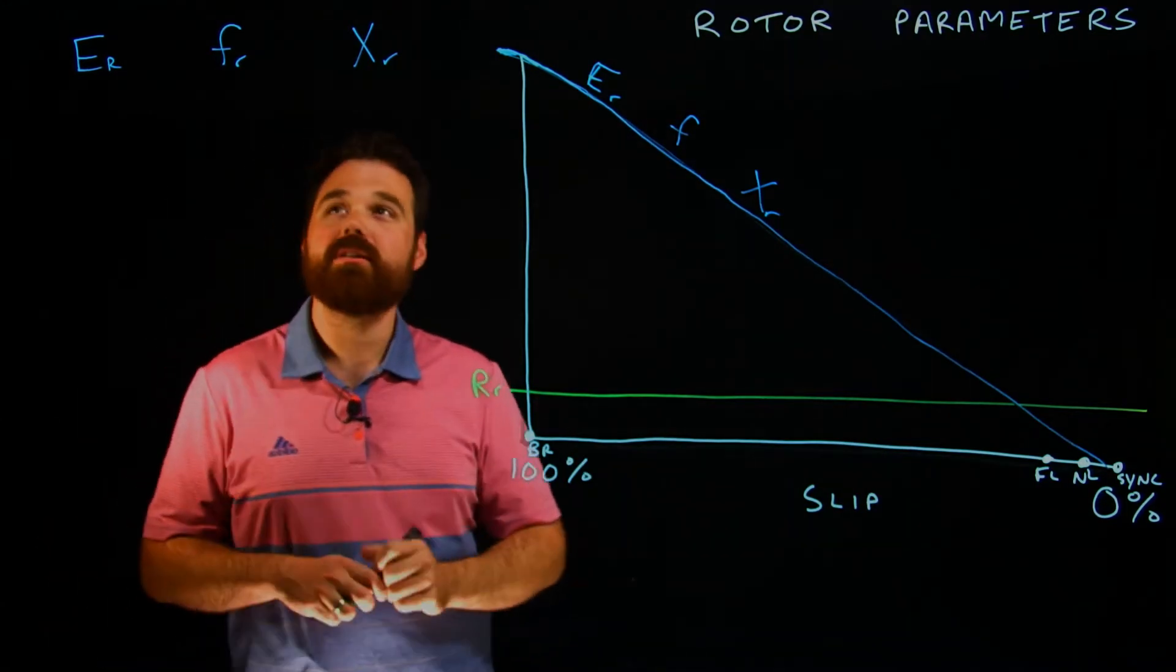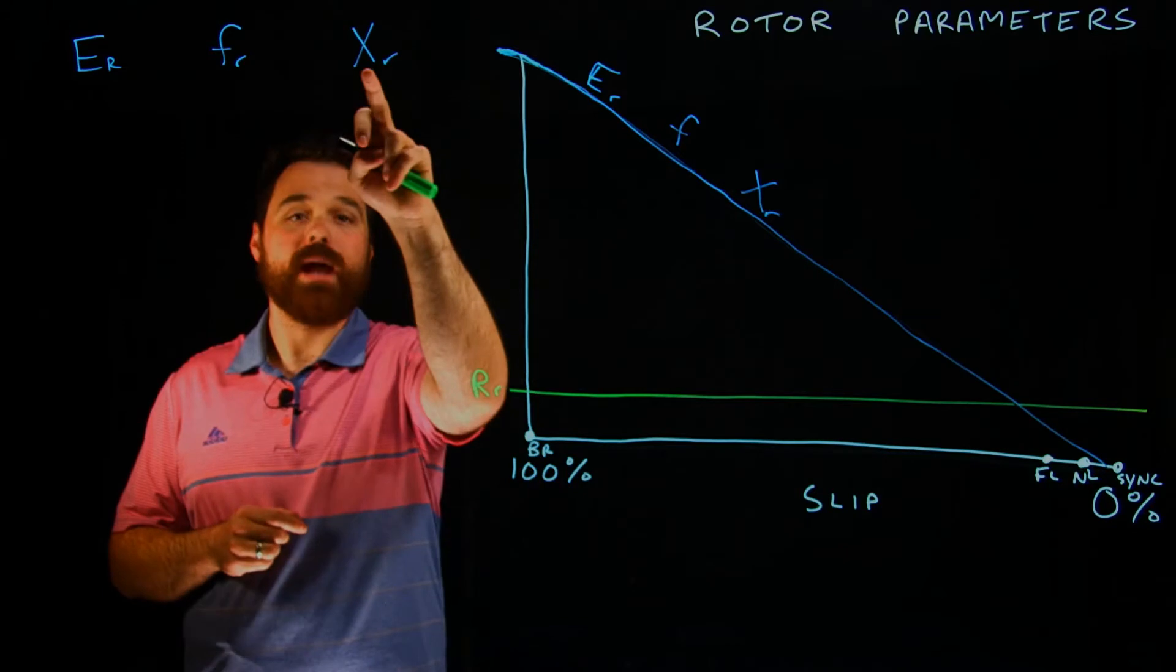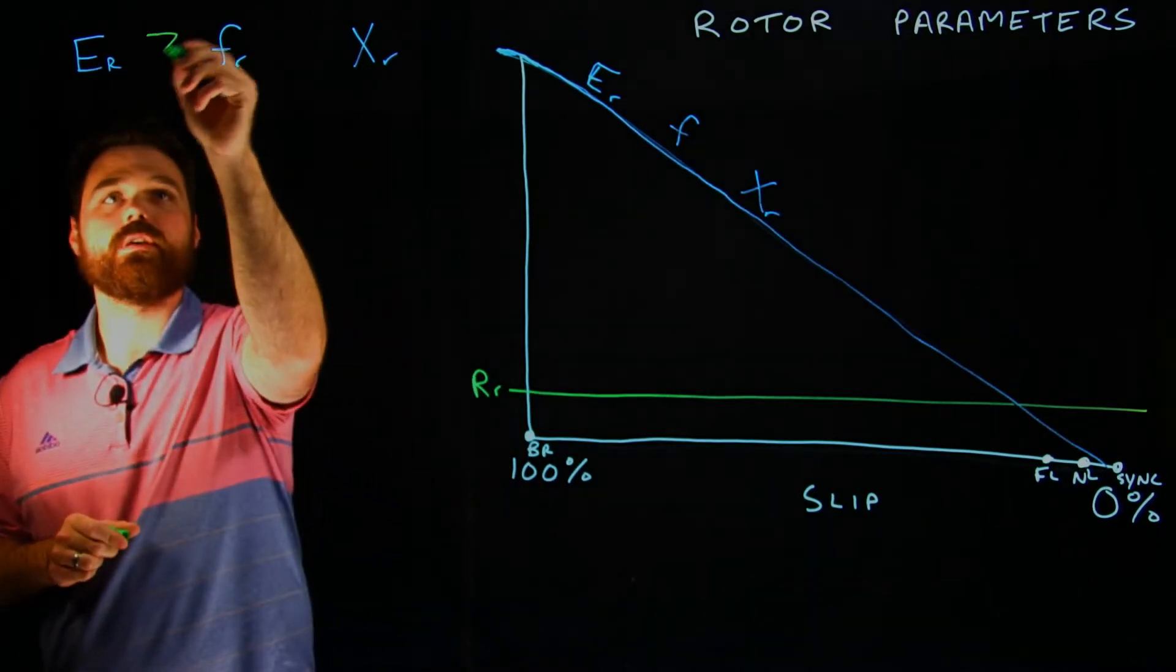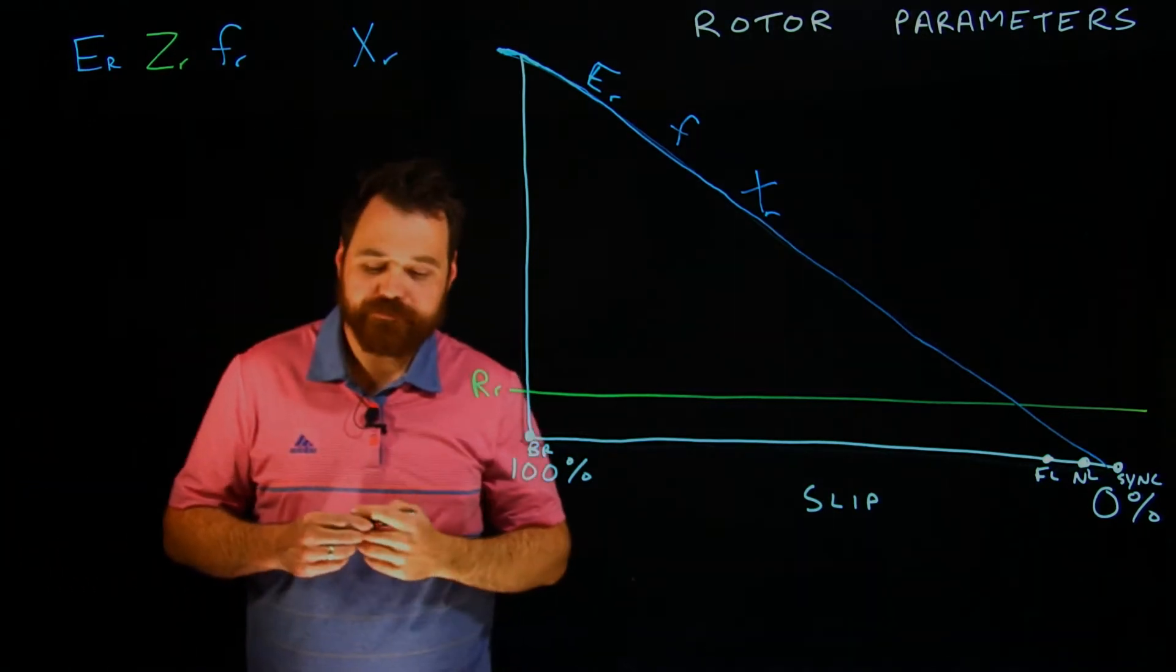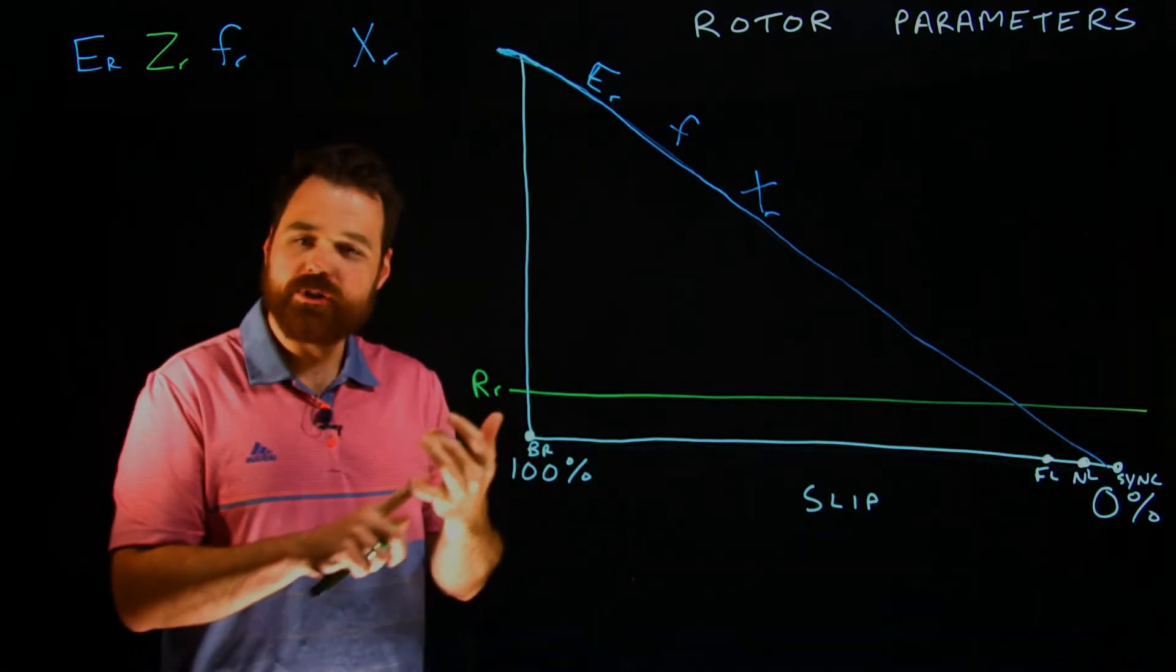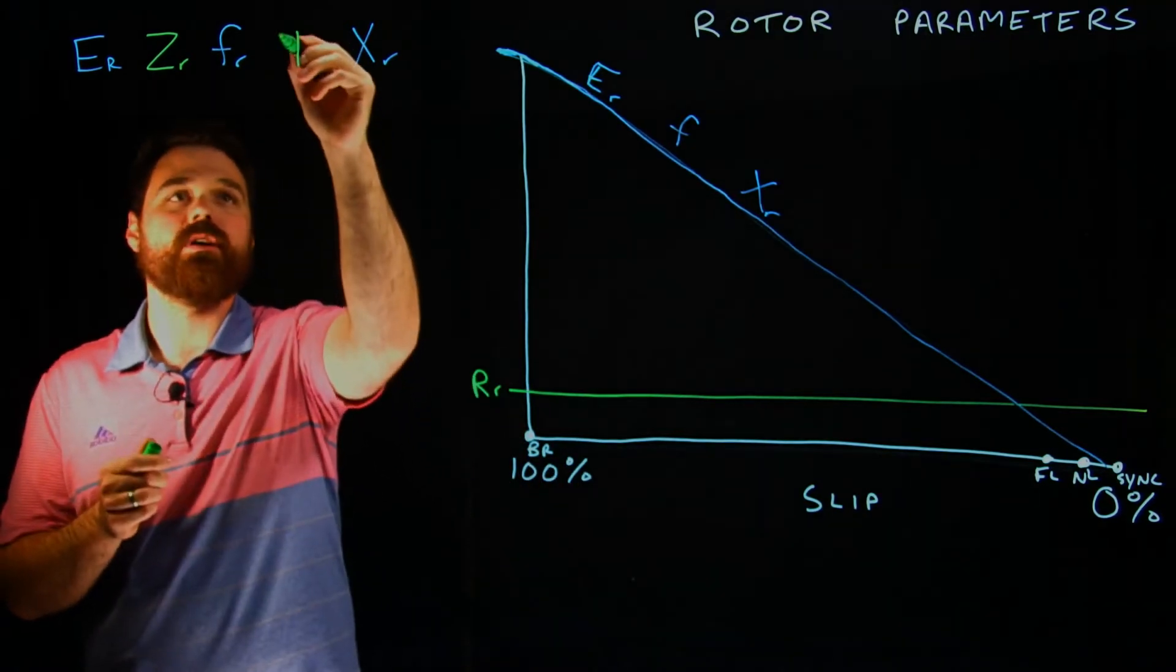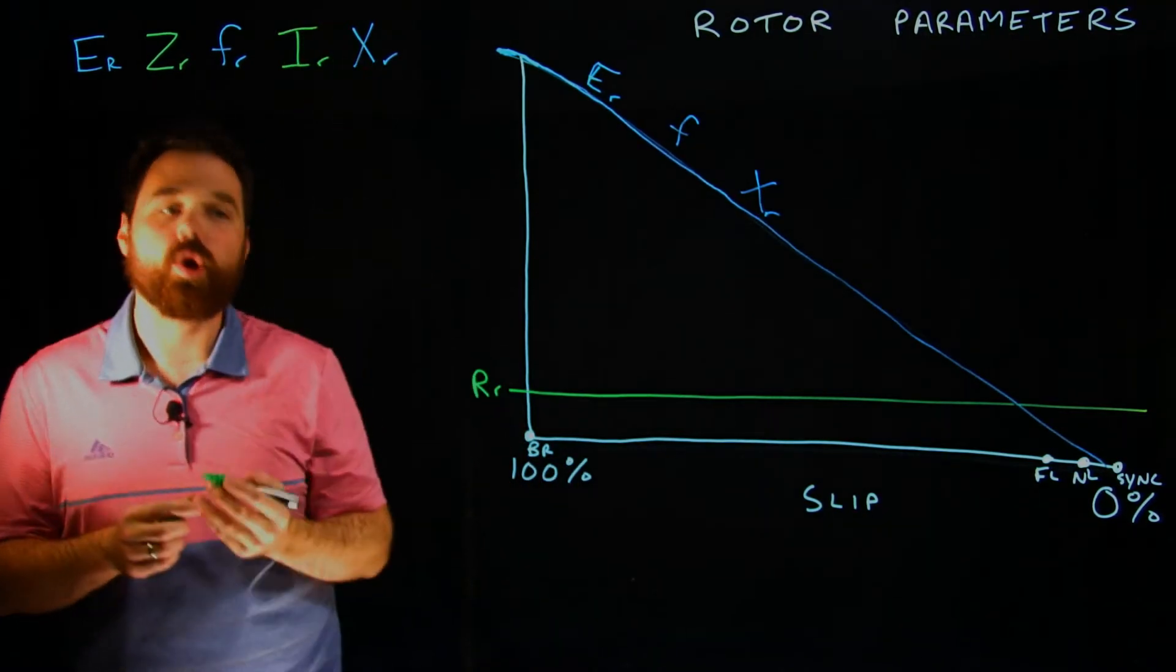The other two things that are happening in the rotor. Because we have reactance and we have resistance, we are also going to end up with an impedance inside the rotor. If I have voltage and I have impedance and I have that path, I'm also going to end up with a current inside the rotor.